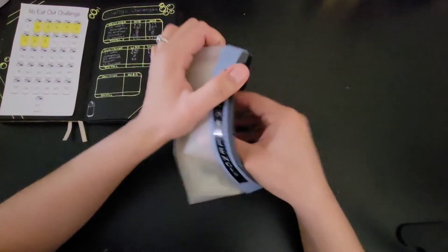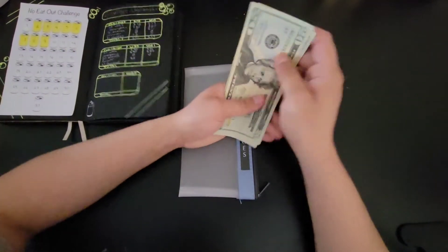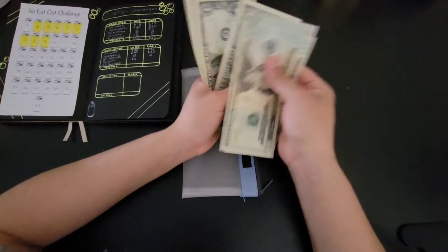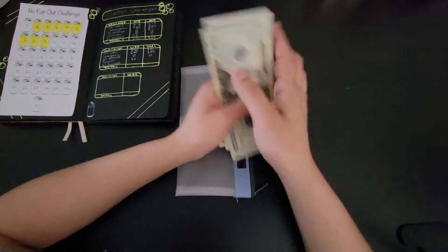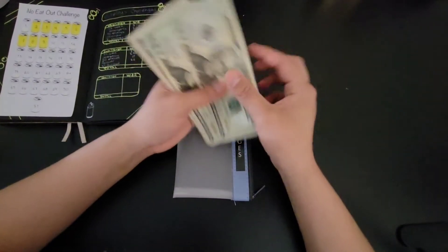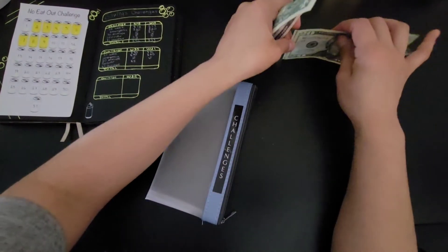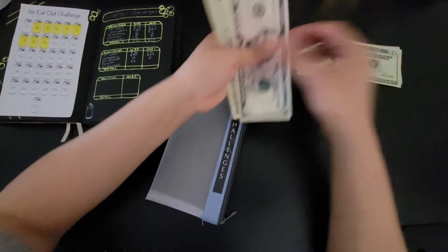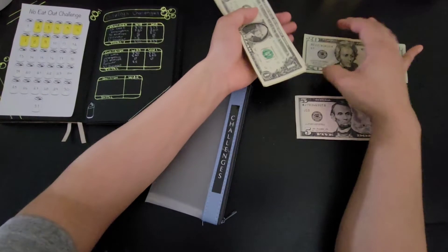We're gonna count the money I'm stuffing today. We're stuffing $20, $40, $45, $46, $37, $48, $49, $50. We're not stuffing a lot like usual for my challenges.